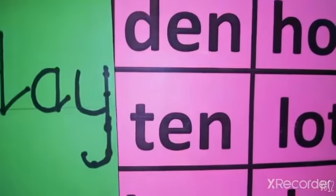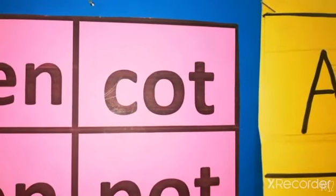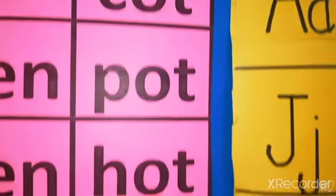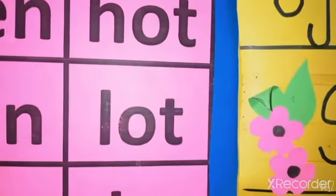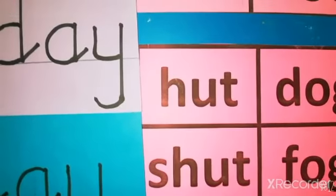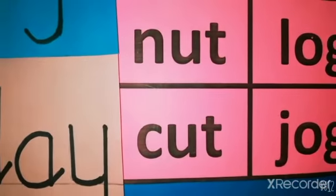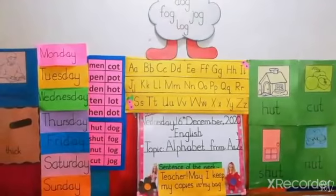Revise: EN series — men, pen, den, hen. OT series — kot, pot, hot, lot, dot. UT series — hut, shut, nut, cut. OG series — dog, fog, log, jog. Today our topic is the alphabet from A to Z.